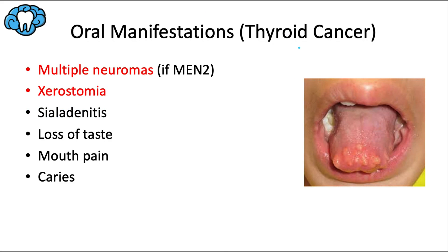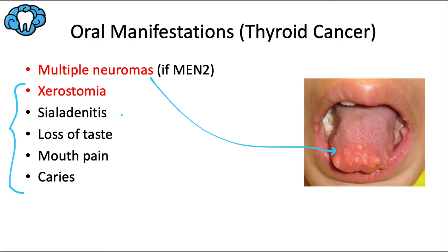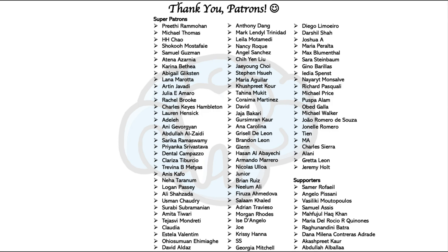For thyroid cancer patients: multiple neuromas at the tip of the tongue are expected if the cancer is linked to MEN2 syndrome. Radioactive iodine used to treat thyroid cancer can itself cause xerostomia, sialadenitis, loss of taste, mouth pain, and caries.